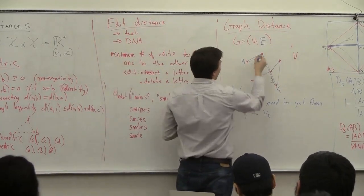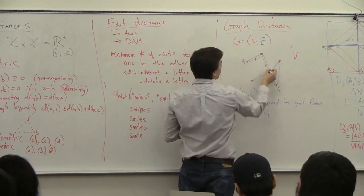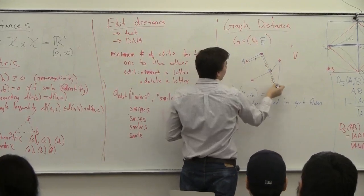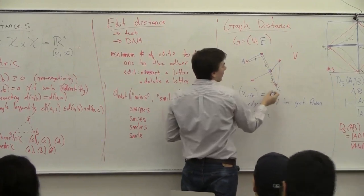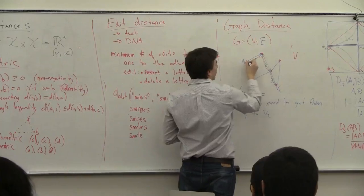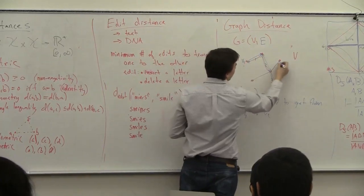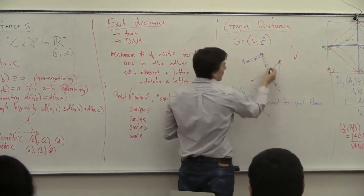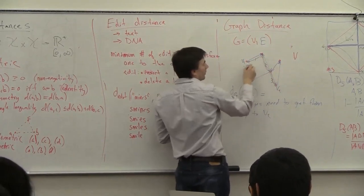Sometimes your edges go in both directions, and in this case it could be that you can go from v1 to v3 going one, two, three steps.